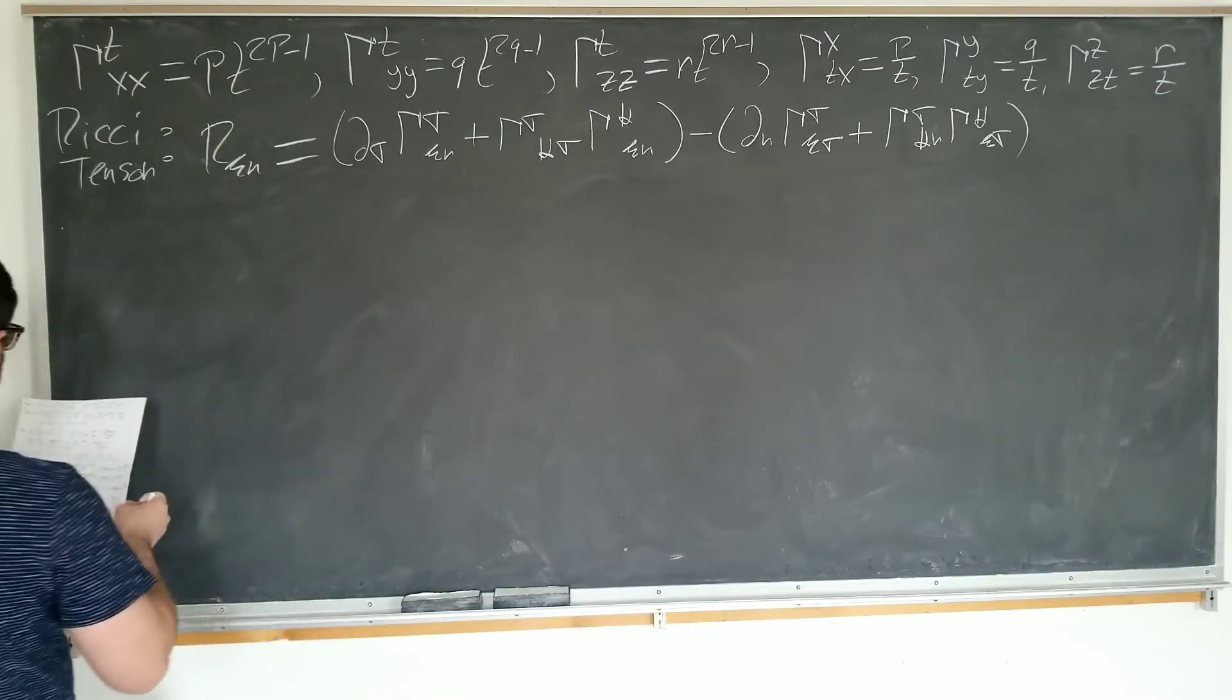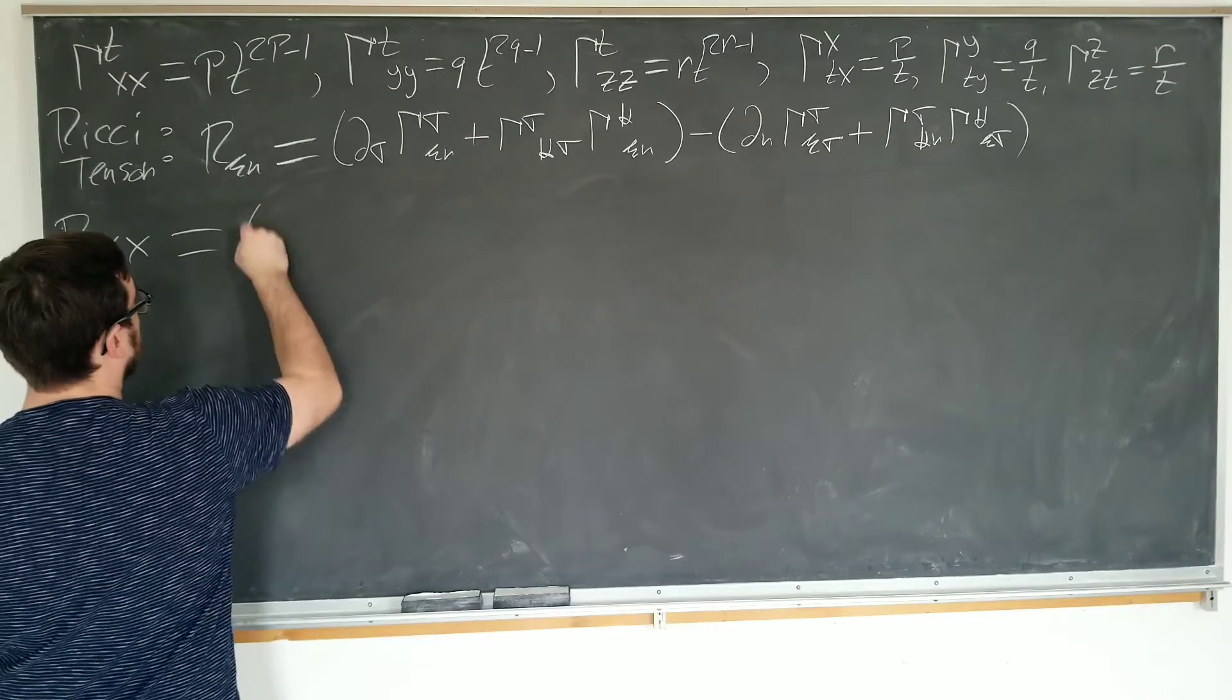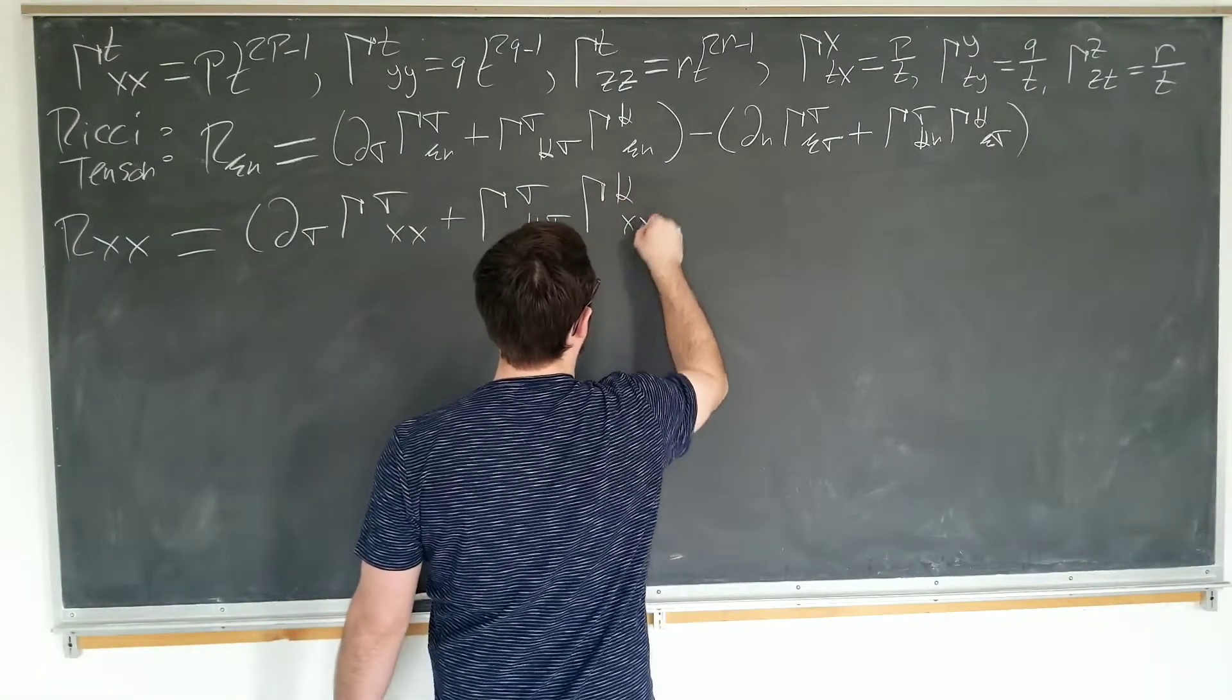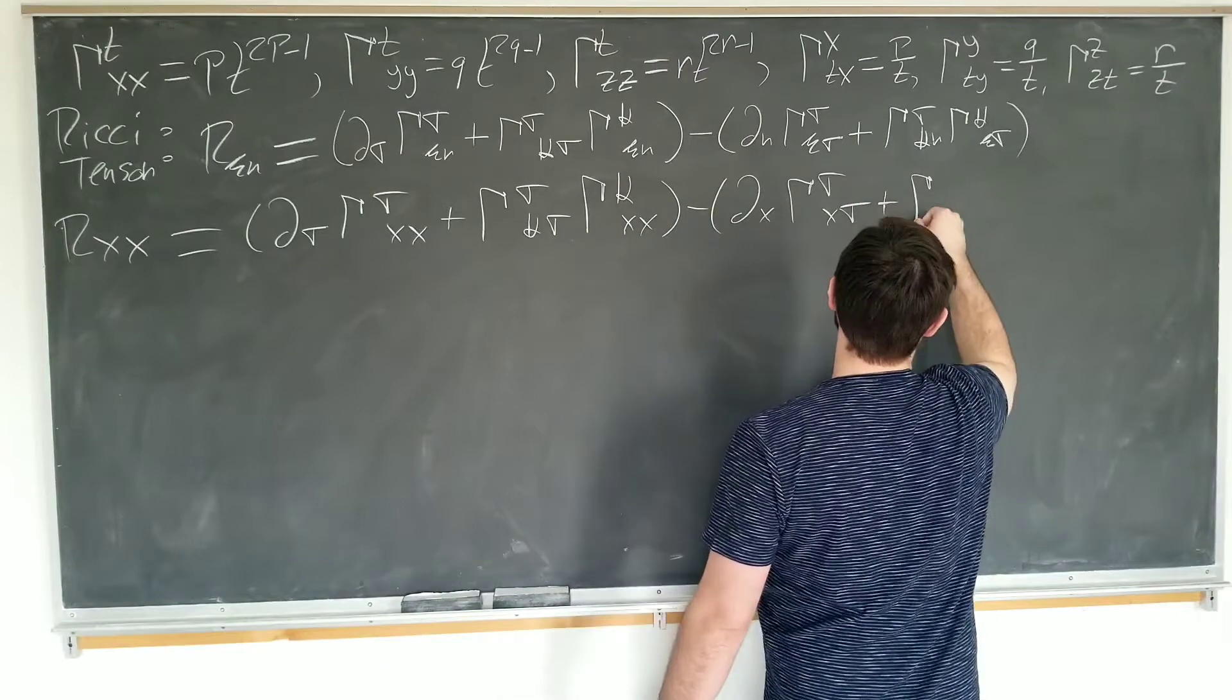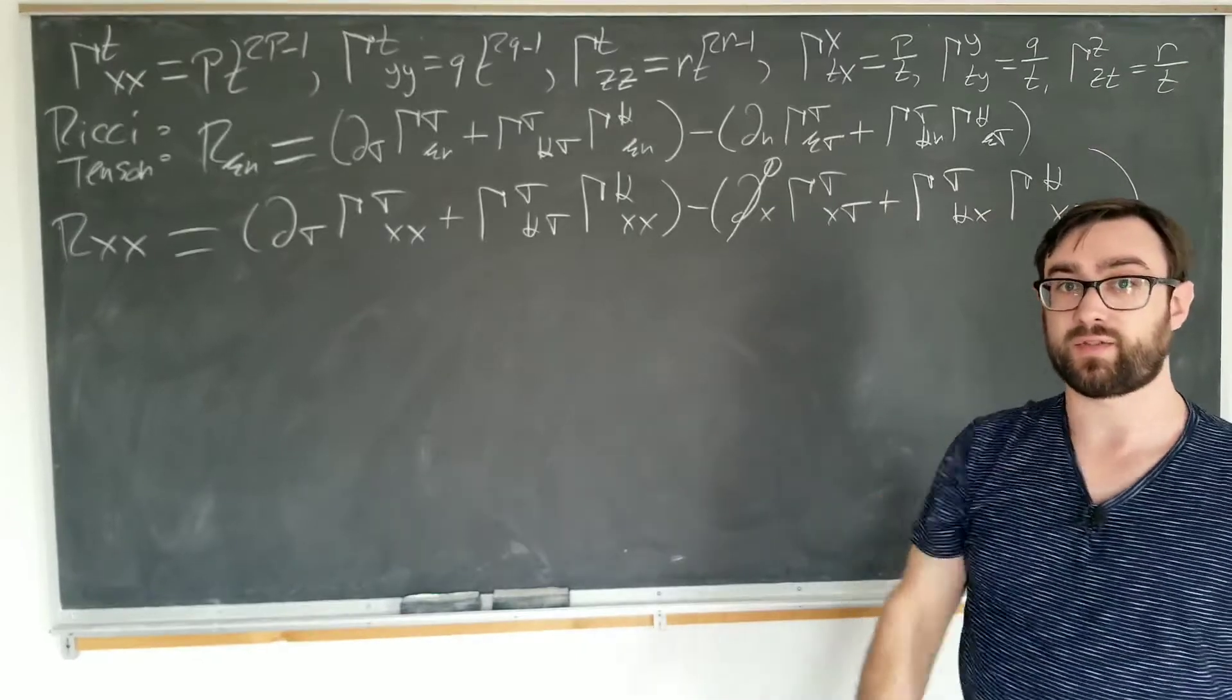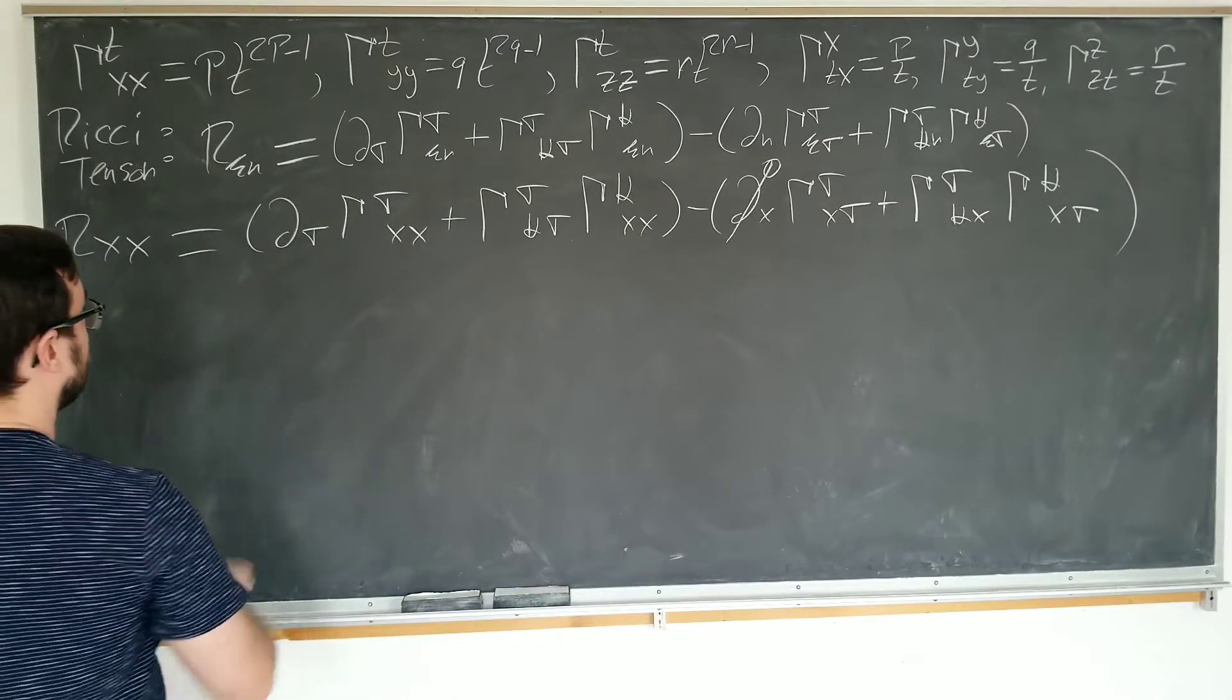Okay. Let's look at our next non-zero term, which is R_XX. Okay. So we have mu and nu both being equal to x. Sigma is our summation variable. xx plus sigma kappa sigma kappa xx minus dx sigma x sigma plus sigma kappa x sigma. x derivative zero, bad x derivative. You don't do anything. We don't need you. Get out of here.